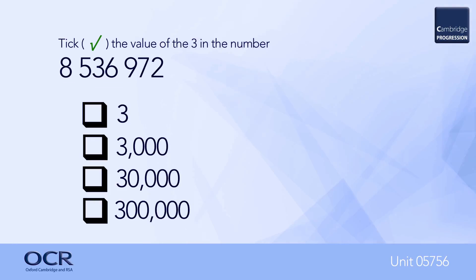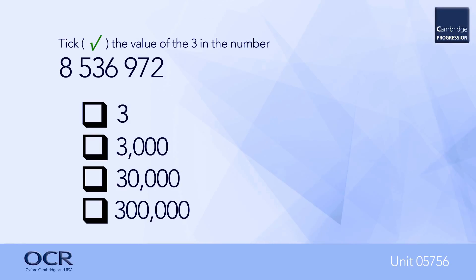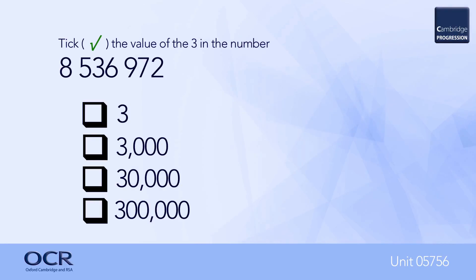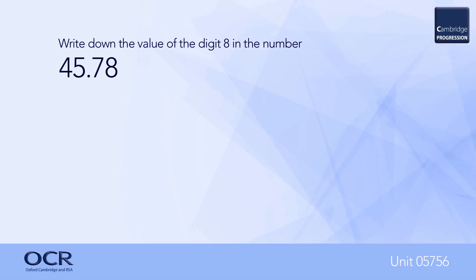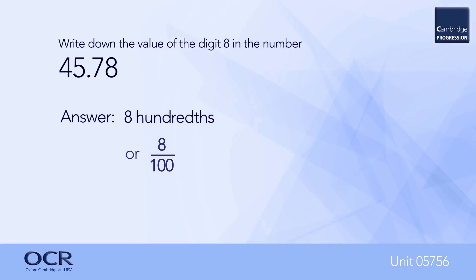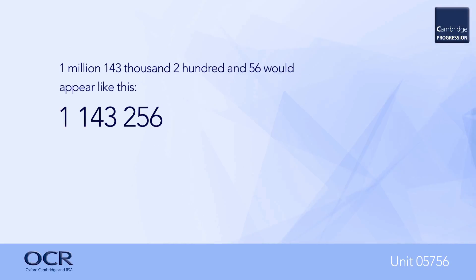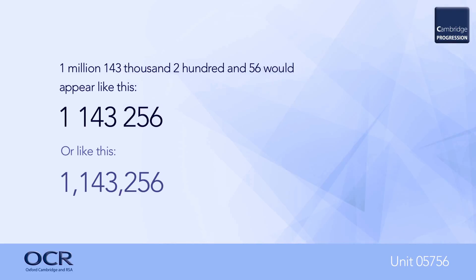Establishing the position of a digit in a number fixes its size, meaning learners ought to be able to answer questions like this one. The answer is the third box, because the three is in the ten-thousand column. Here we can see the same idea as applied to a decimal number, although this is not assessed in this unit. OCR practice uses half spaces as separators, as shown here; however, the use of commas is also perfectly acceptable.